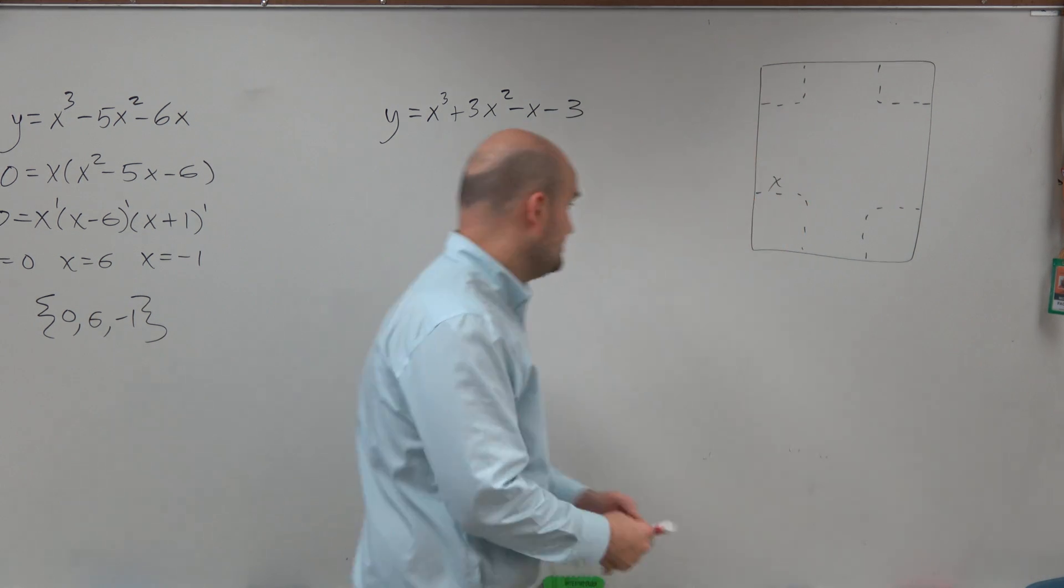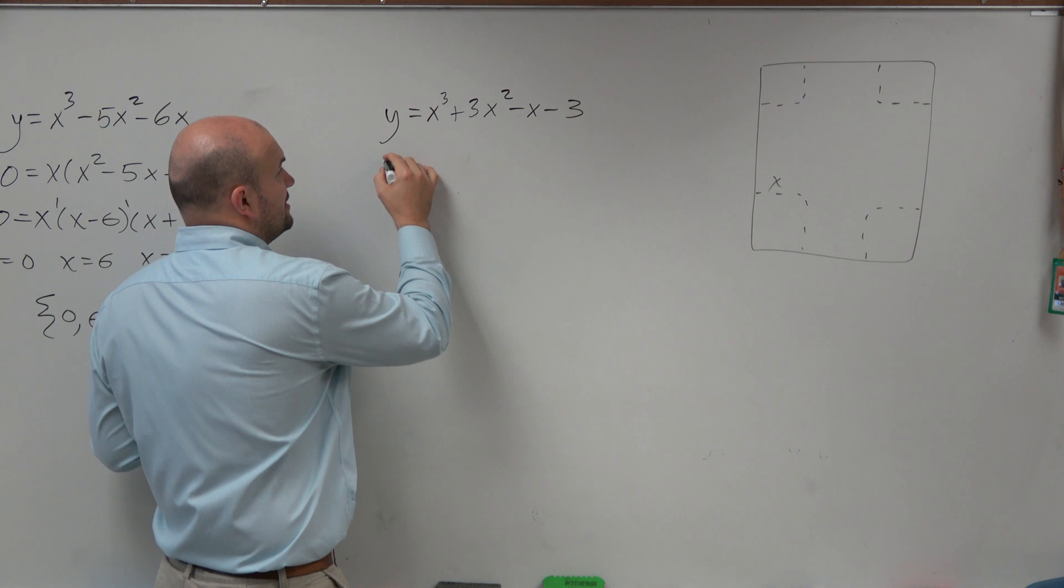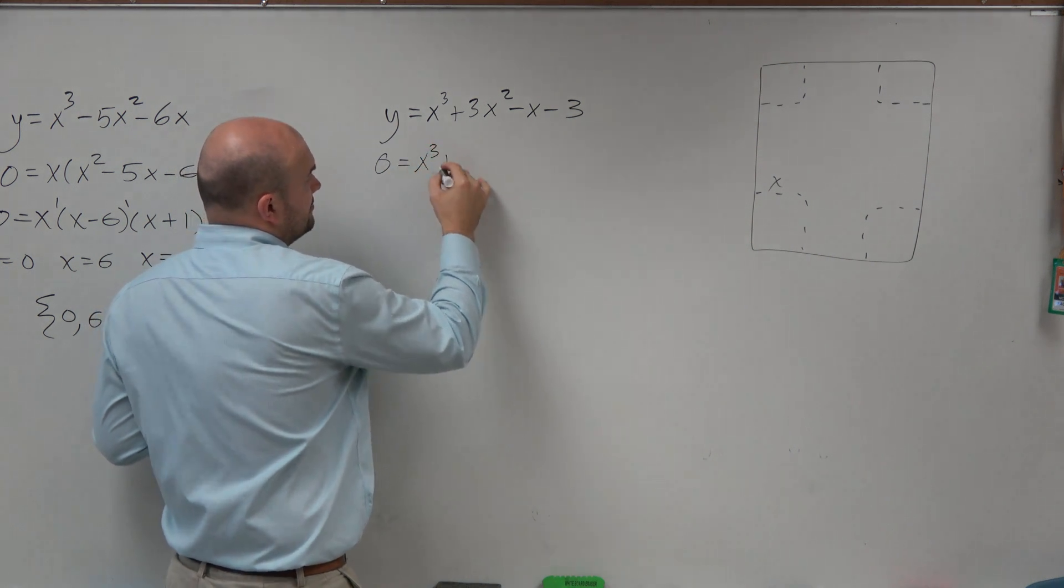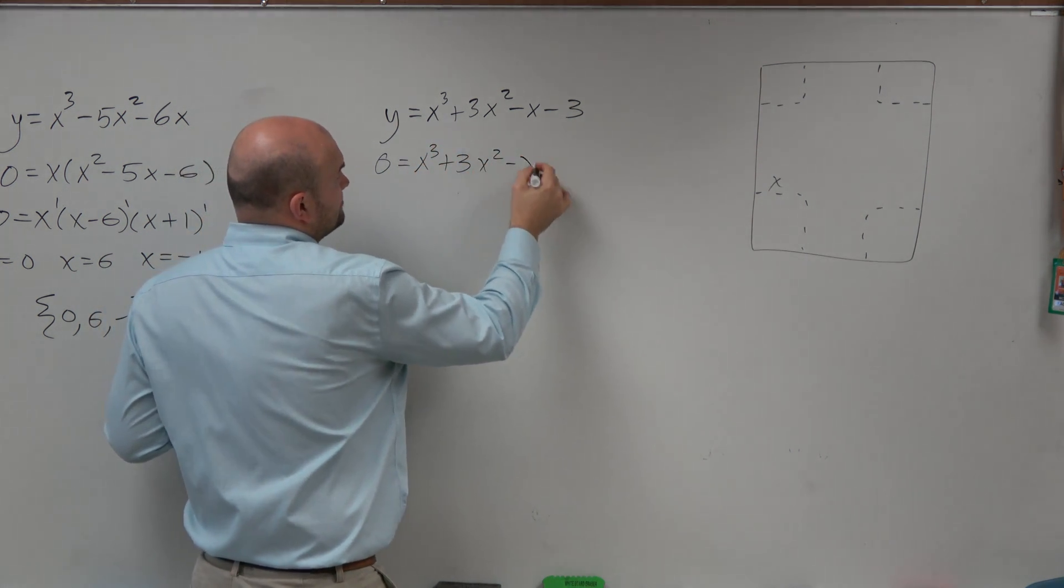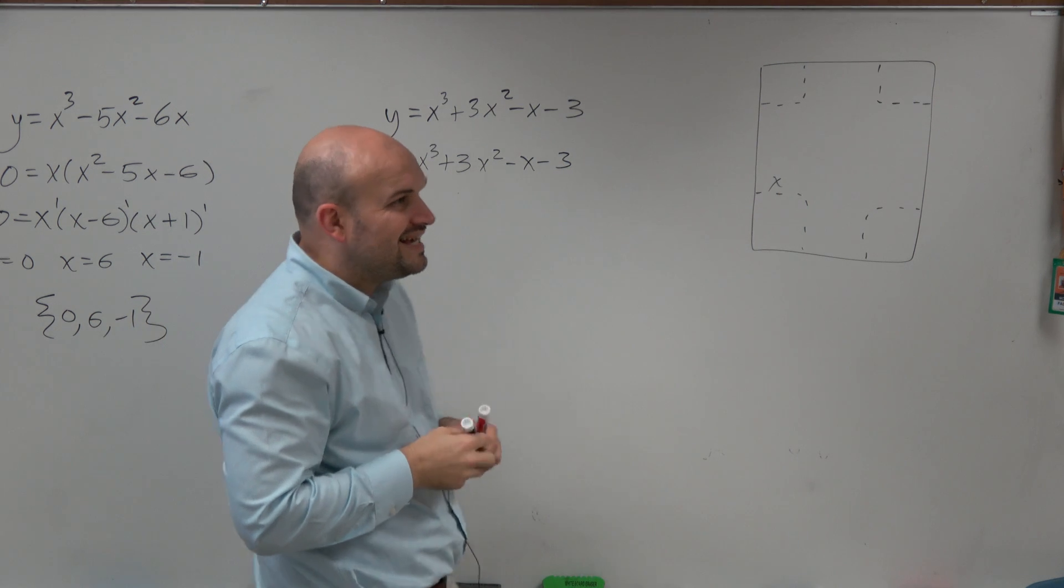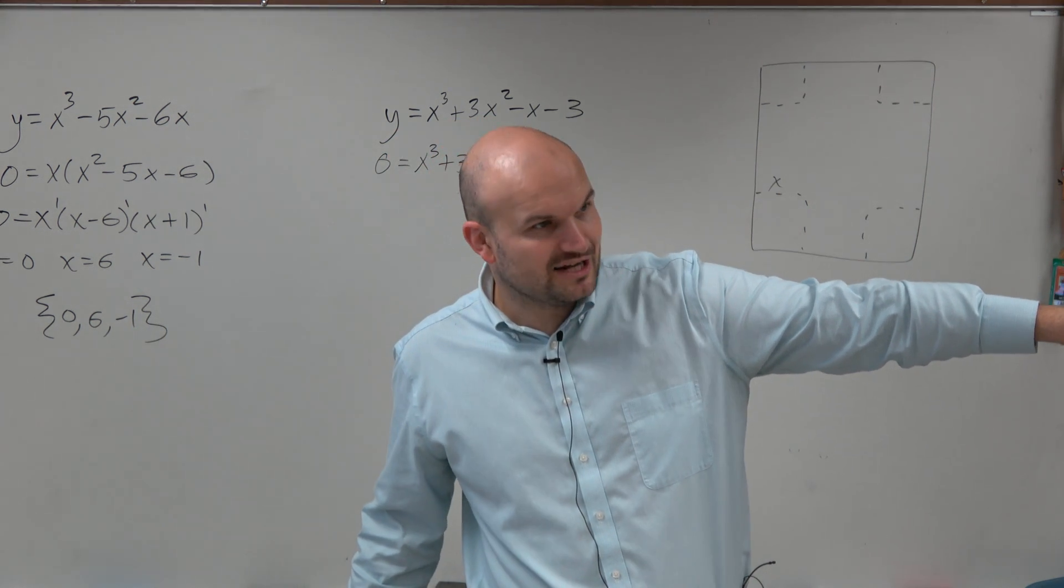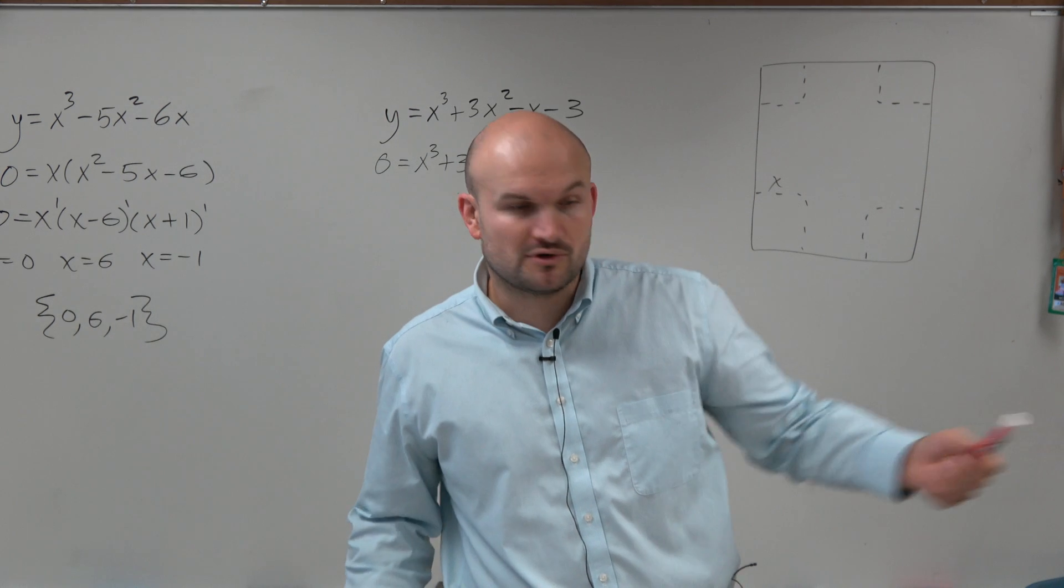So what that means is, first thing is we're going to set it equal to zero, just like we did before. We want to get this to factored form. But we can't use the same technique we did for trinomials, because it's not a trinomial, right? It's a polynomial of four terms.